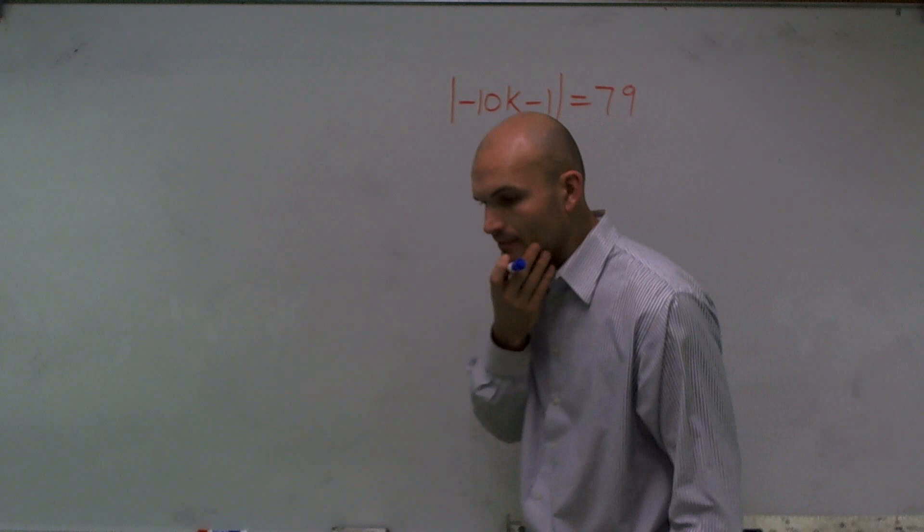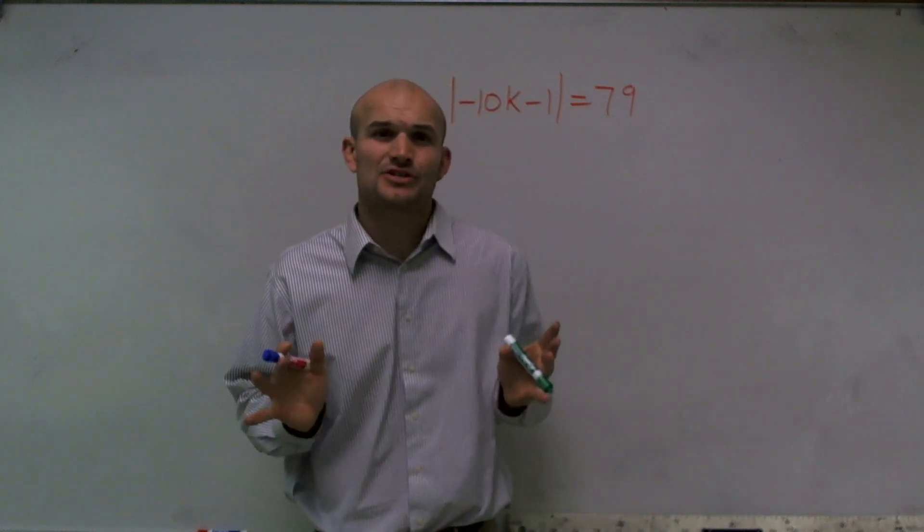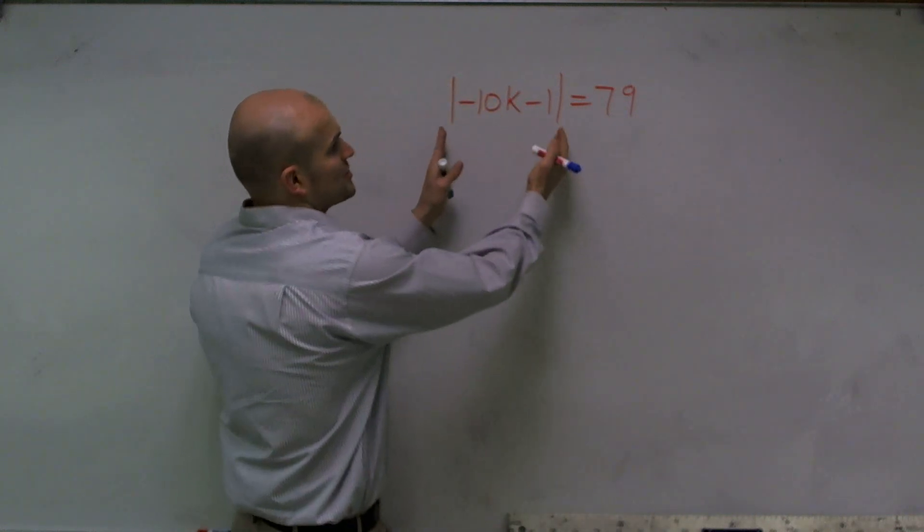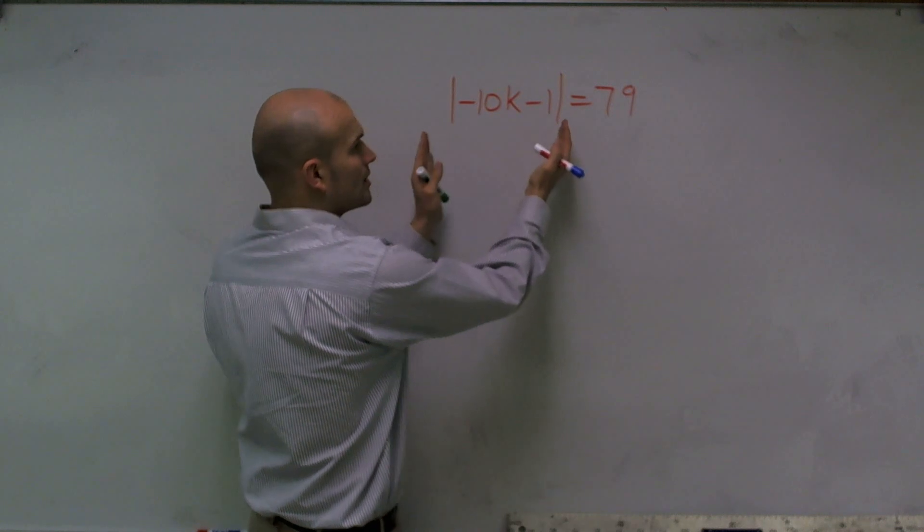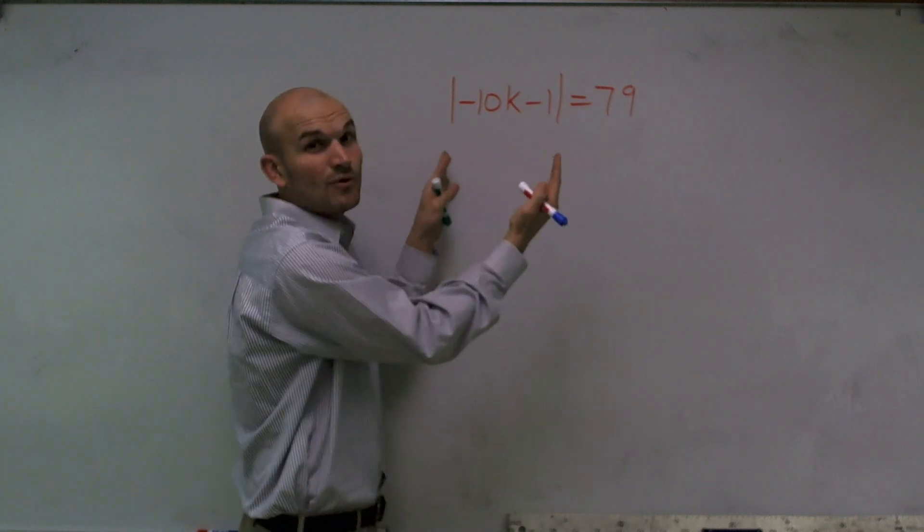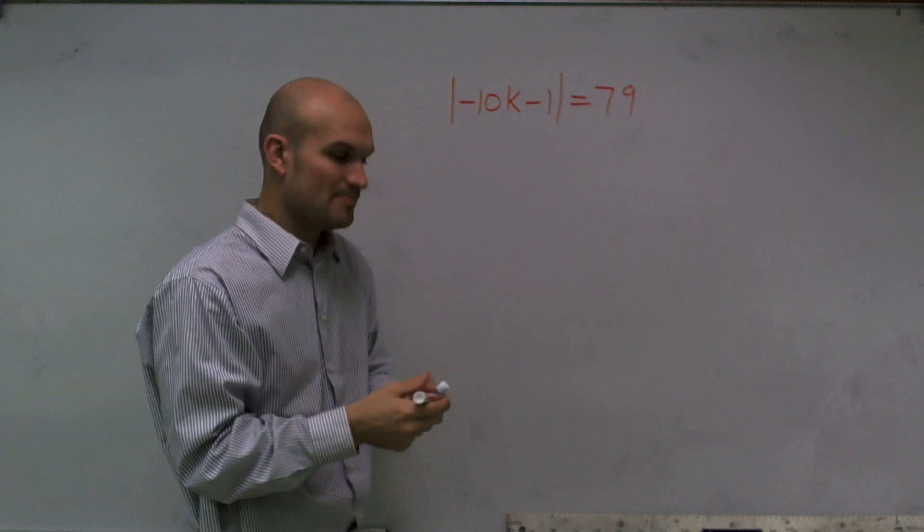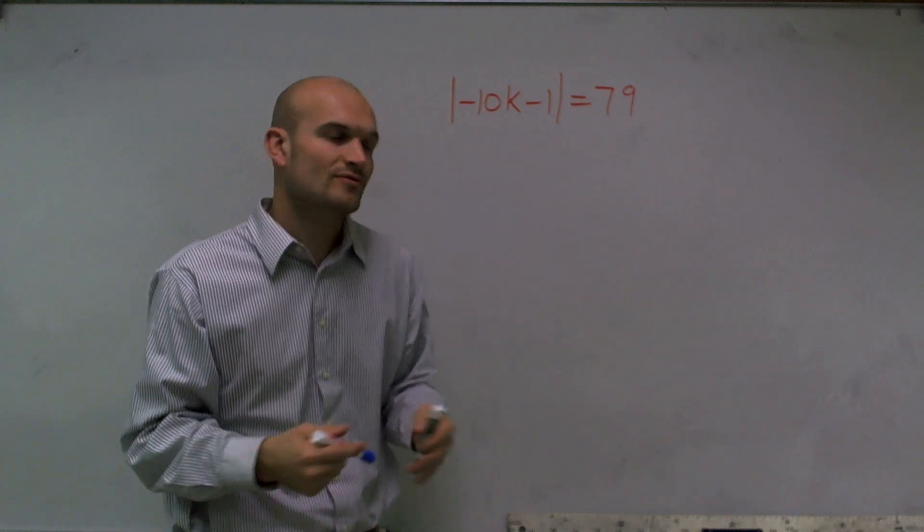Here we have the absolute value of negative 10k minus 1 equals 79. When solving absolute value equations, there's a couple things I need to make sure of. First of all, I need to make sure that my absolute value expression is isolated on one side of the equation, and the reason is the whole concept of why we have absolute value.